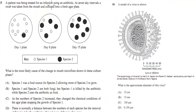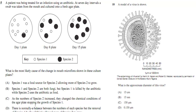The next question: a patient was being treated for an infection using antibiotics. At 7-day intervals a swab was taken from the mouth and cultured onto a fresh agar plate. What is the most likely cause of the change in the mouth microflora shown in the culture plates? D. There is a normal balance between the numbers of each species, but the removal of species 1 by the antibiotics allowed more of species 2 to grow.